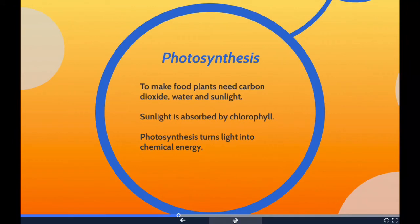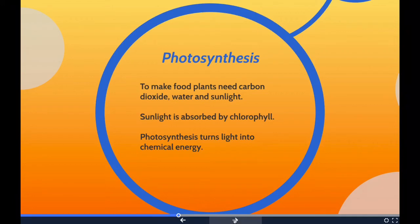Now we have photosynthesis. The word photosynthesis can be separated into two smaller words: photo, which means light, and synthesis, which means putting together. Plants need food, but they do not have to wait on people or animals to provide for them — most plants are able to make their own food using light through a process called photosynthesis. To make food, plants need three things: carbon dioxide, water, and sunlight.